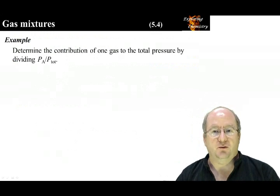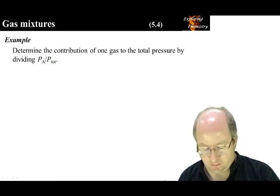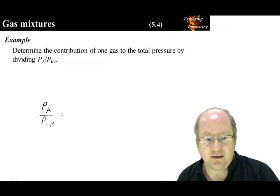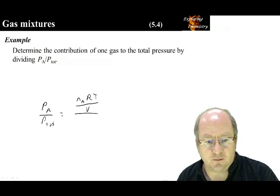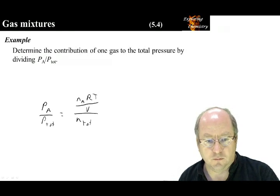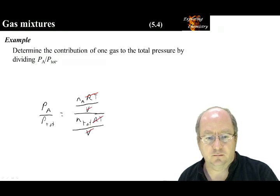So to determine the contribution of one gas to the total pressure, we are going to divide PA over P total. And that is equal to number of moles of A times RT over V, divided by number of moles total times RT over V. Here RT and V cancel.